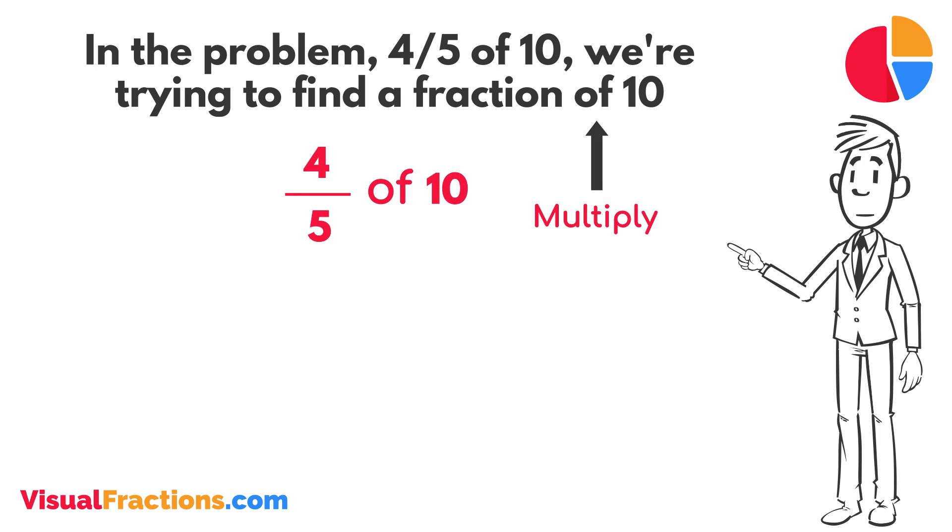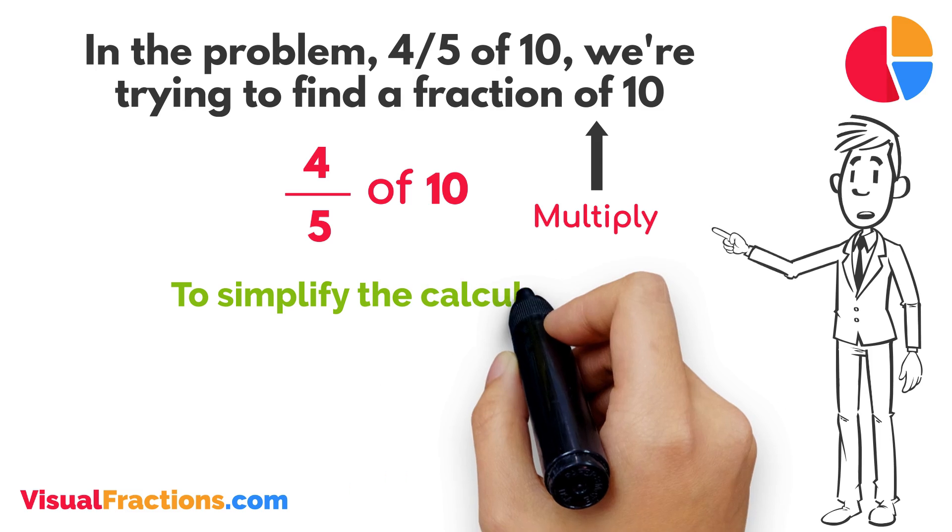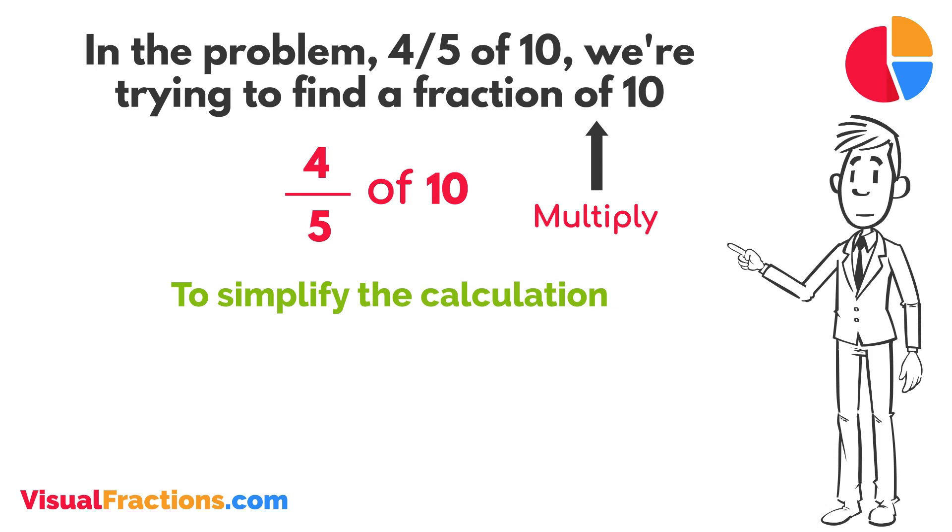To simplify the calculation, we first convert our whole number into fraction form, writing 10 as 10 over 1. This transformation makes it easier to work with our numbers as fractions.